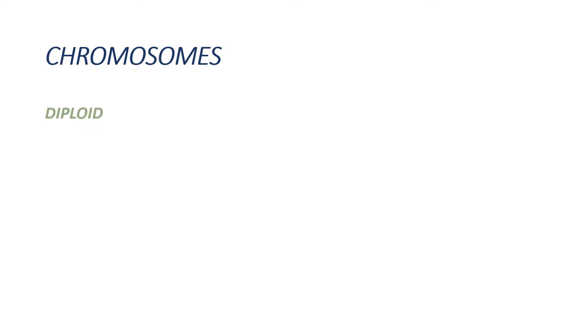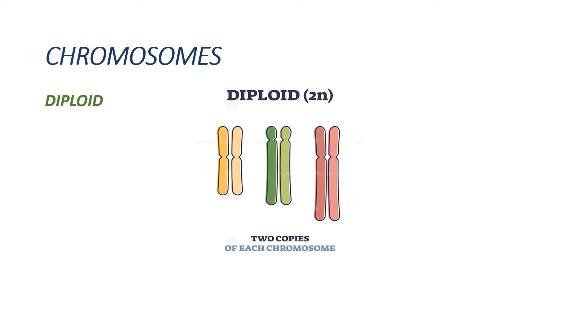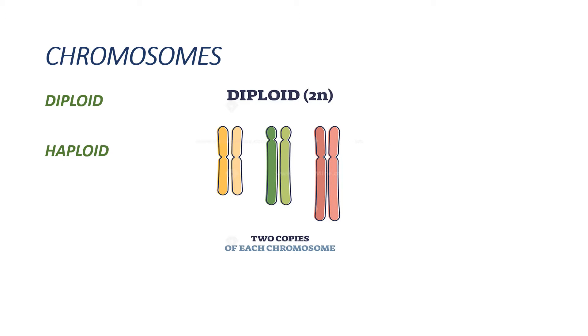Chromosomes are present in all living organisms. The set of chromosomes decides the ploidy of the individual. Diploid individuals have two sets of chromosomes — there are two copies of each chromosome in these individuals. Haploid individuals have one set of chromosomes — there is one copy of each chromosome in these individuals.